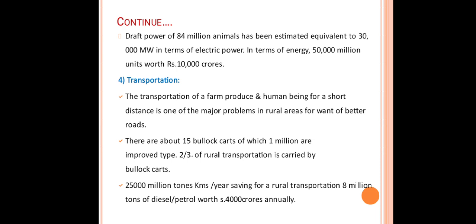Transportation of farm produce and human beings for short distances is one of the major problems in rural areas for want of better roads. Hence, draught animals are used for transportation. There are about 15 million bullock carts, of which 1 million are improved. Two-thirds of rural transportation is carried by bullock carts, covering 25,000 million ton-kilometers per year, saving 8 million tons of diesel or petrol worth 4,000 crores annually.